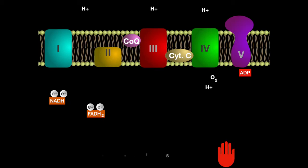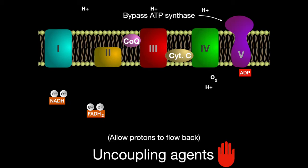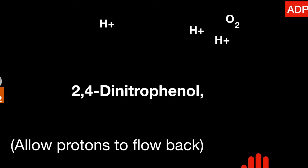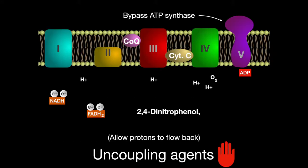Finally, there are uncoupling agents. They allow protons to flow back into the matrix, bypassing ATP synthase. The flow of protons then produces heat instead of ATP. 2,4-dinitrophenol is an illegal weight loss drug that acts through this mechanism. Aspirin also does this and can create a fever when overdosed. Brown fat has more mitochondria than white fat, and the protein thermogenin allows heat production by mitochondrial uncoupling.